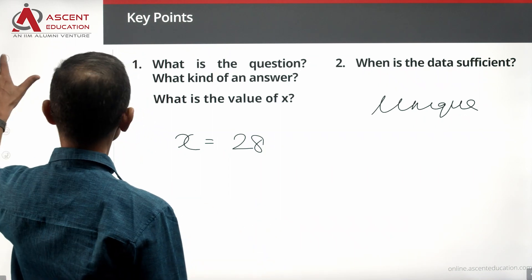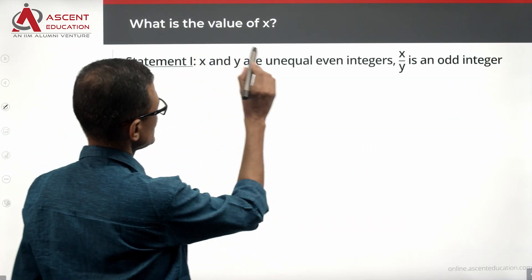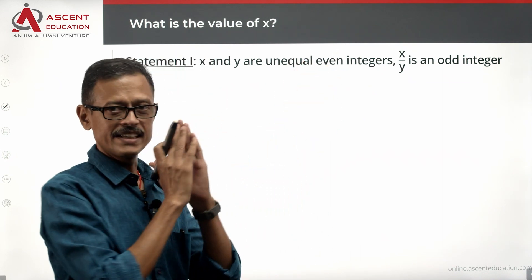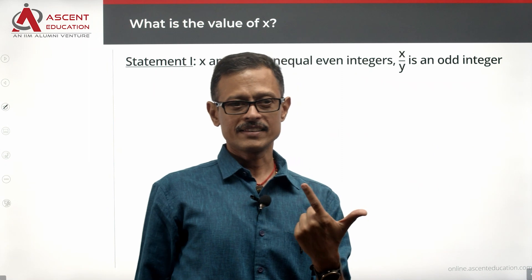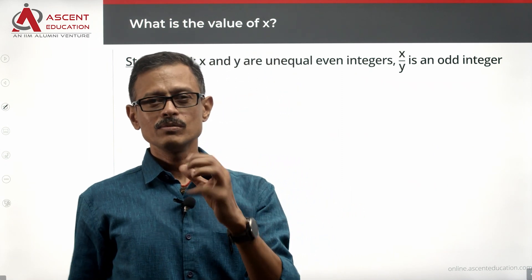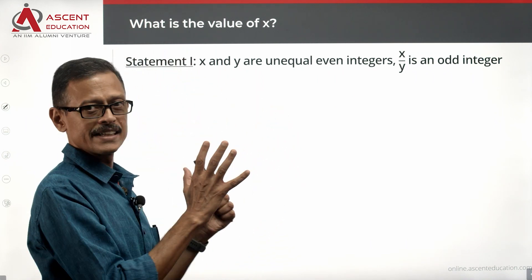What is X? Statement 1: X and Y are unequal even integers. X by Y is an odd integer. Okay. So X by Y is an odd integer, that's what we have to say. And X and Y are unequal integers.